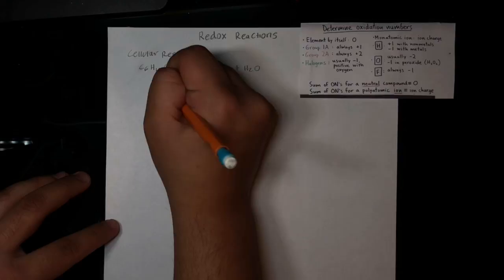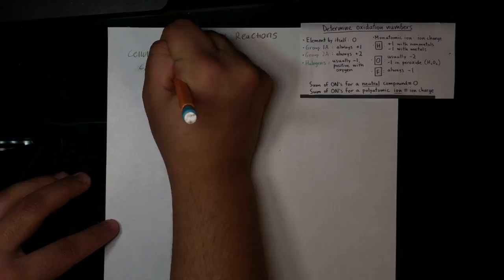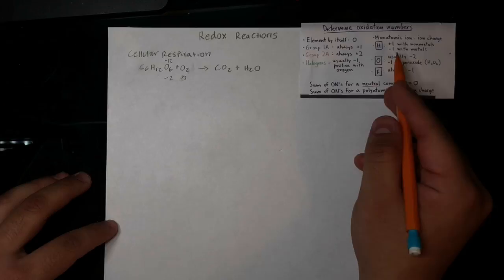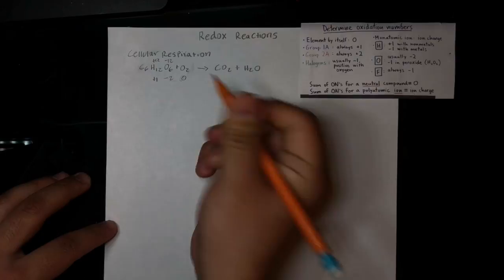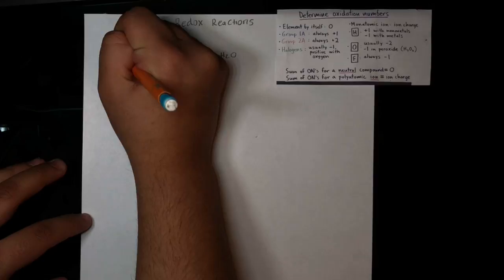If we multiply those two together, we get negative 12. Here we have hydrogen — hydrogen is plus one with nonmetals, and this is a nonmetal, so this would be plus one. And one times 12 gives us plus 12. As we can see, this equation right here is balanced, so this means that carbon is zero. The oxidation number of carbon in glucose is zero.